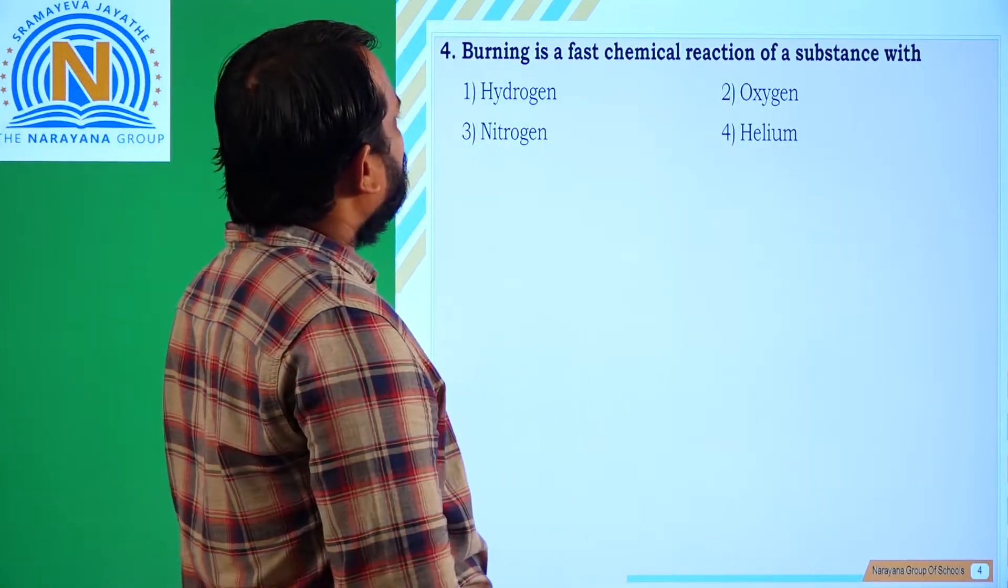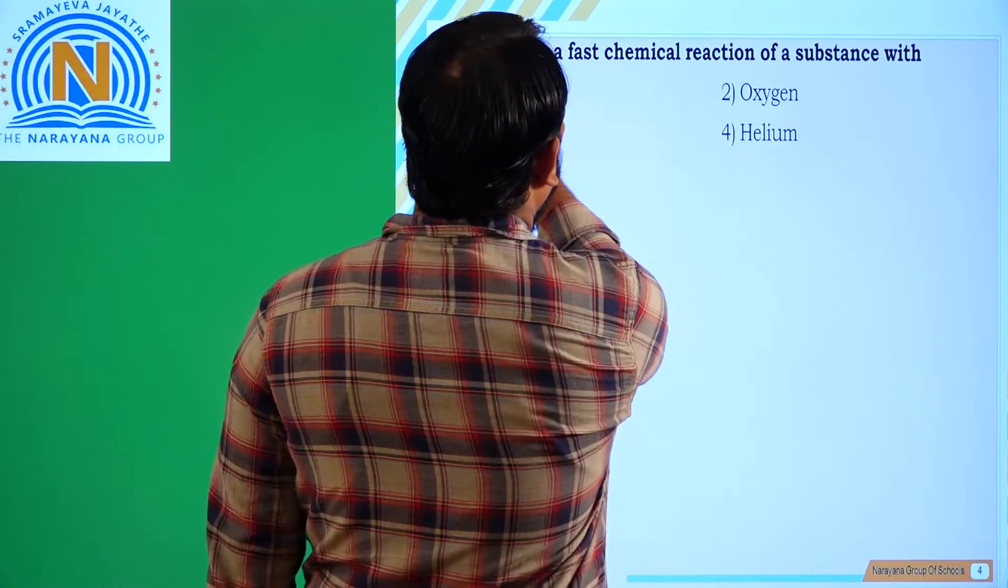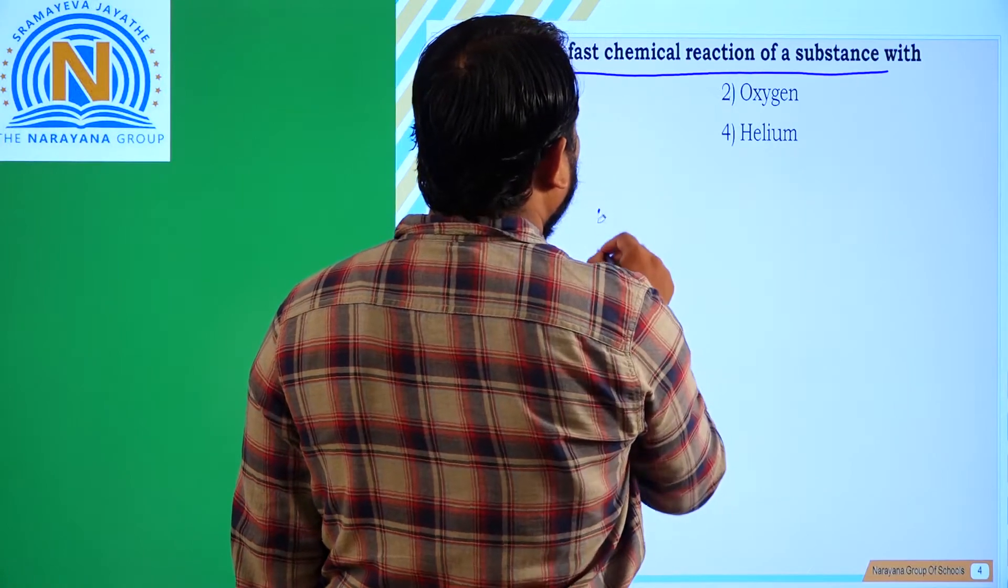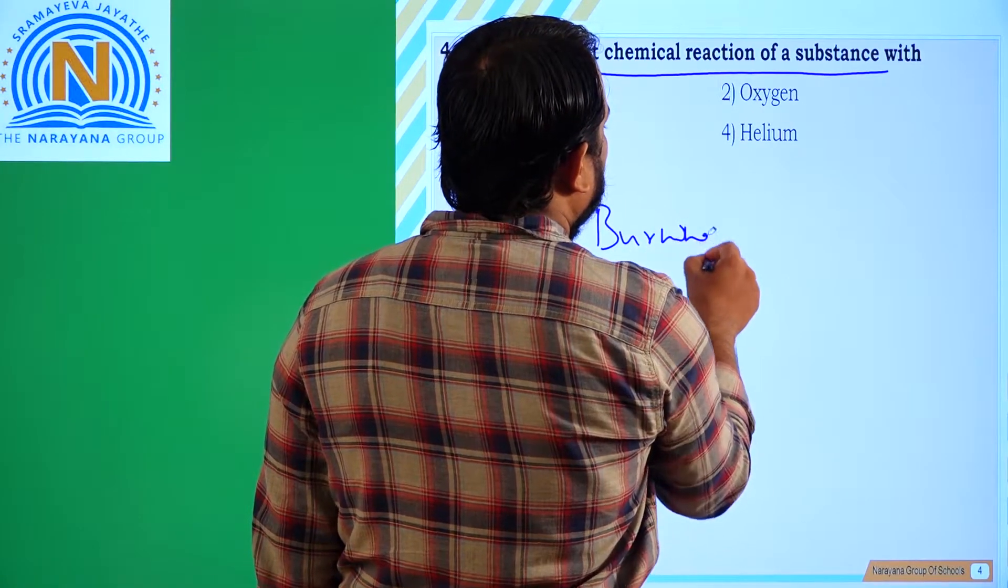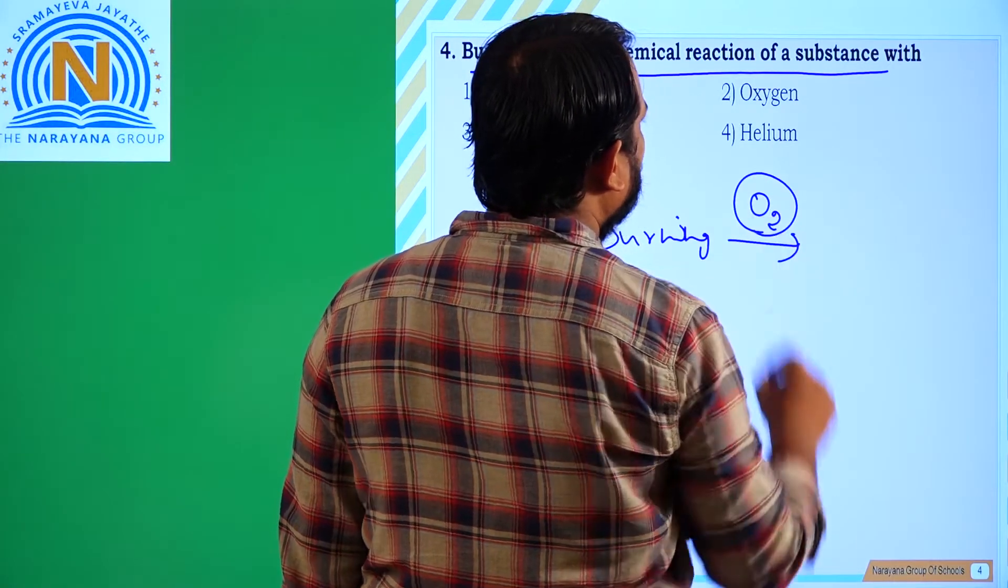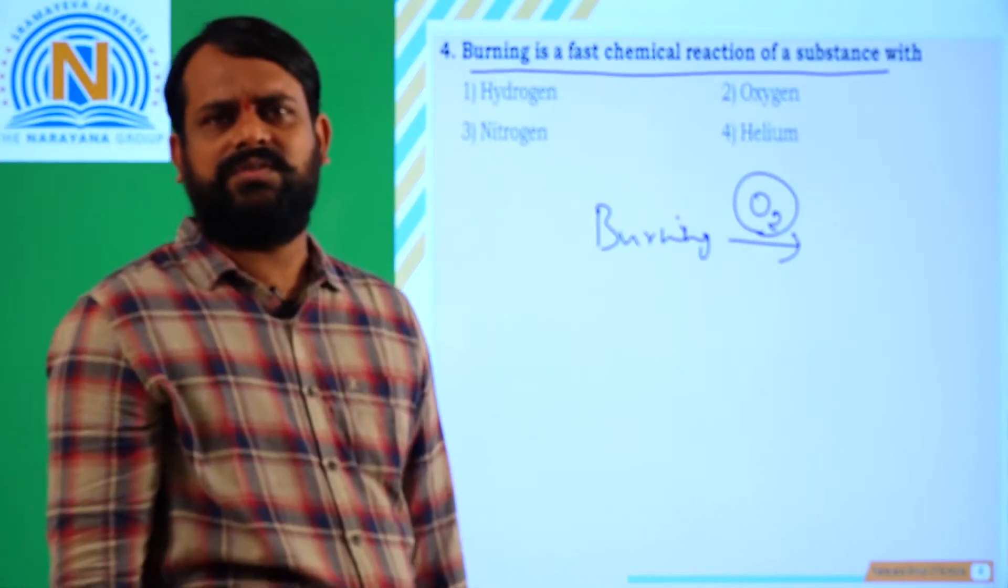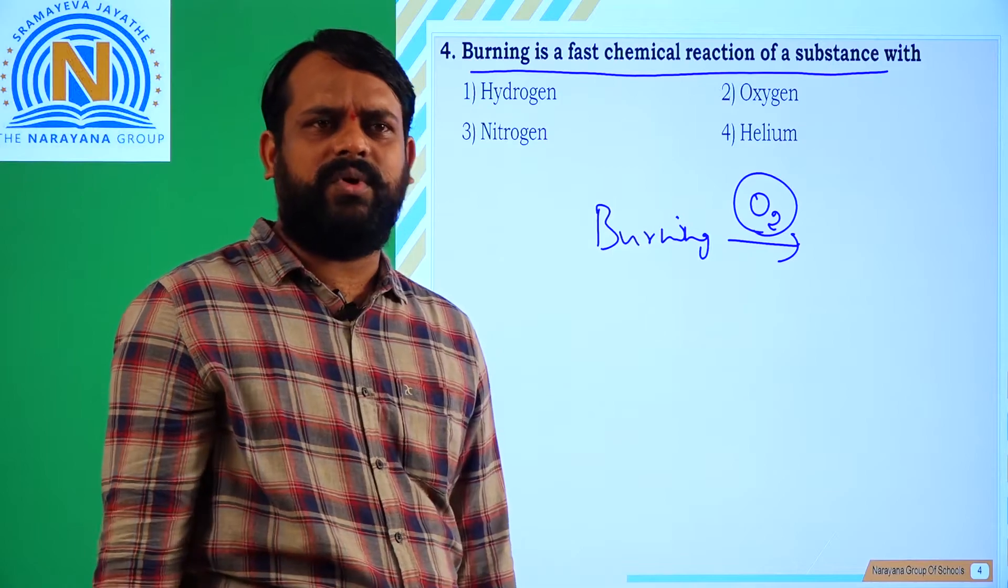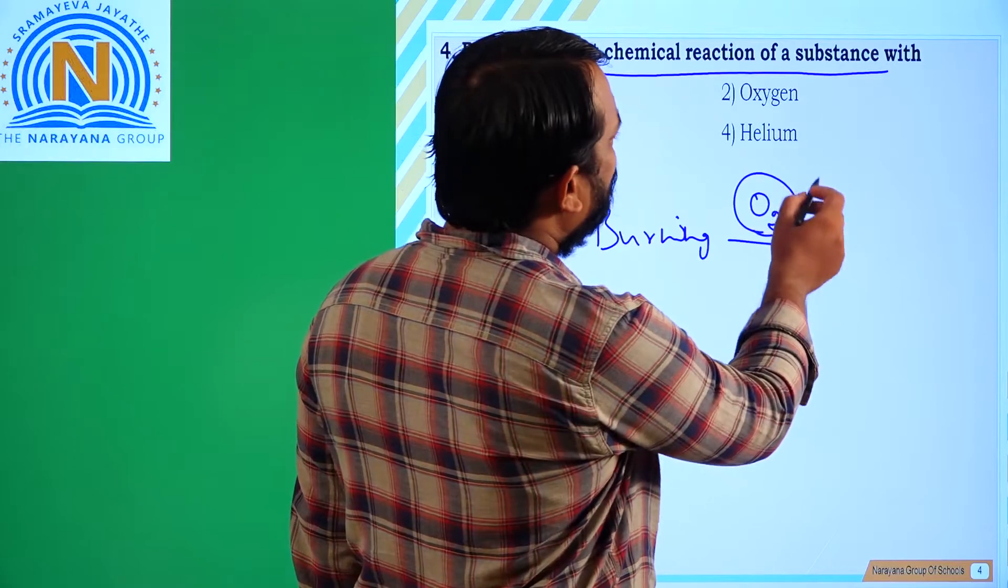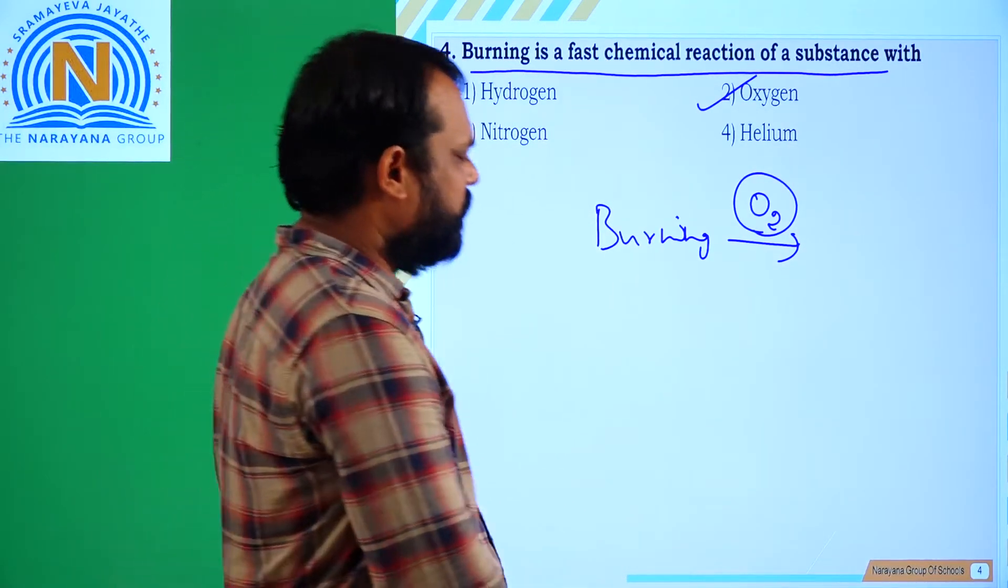Next question. The burning is fast chemical reaction of a substance with. Now only we discussed it. Burning means the heating of any substance in presence of oxygen. The essential thing here we want is only which gas? Oxygen gas. Without oxygen there is no chance of combustion or no chance of burning. Oxygen is essential for burning. That means burning is a fast chemical reaction only in presence of which gas? Oxygen gas. Right. We will move to next question.